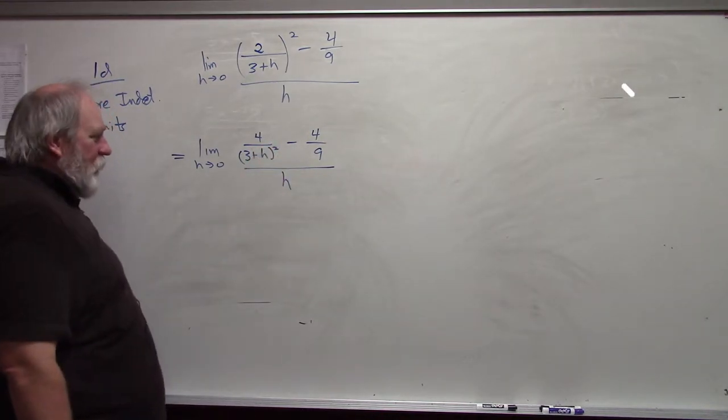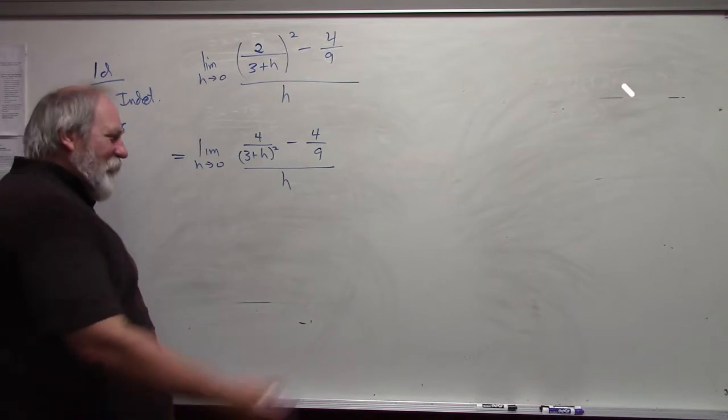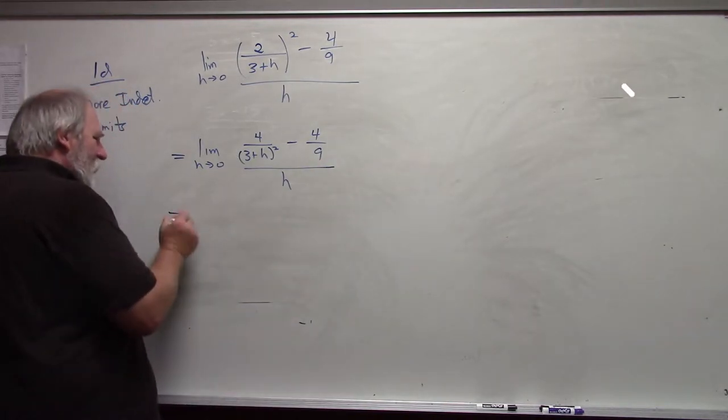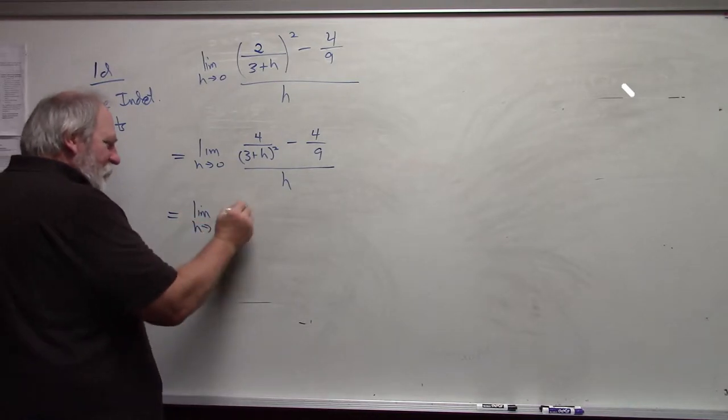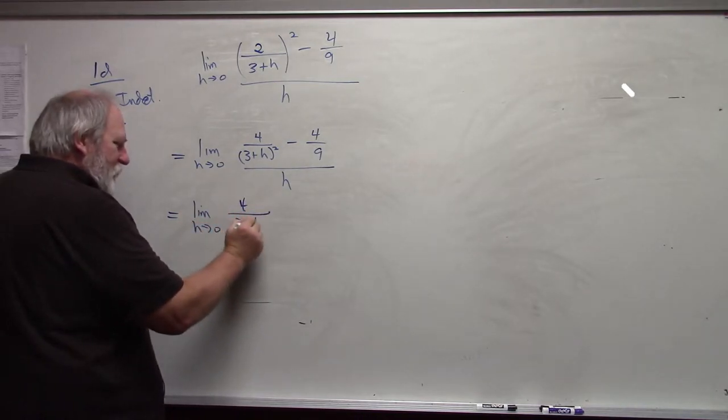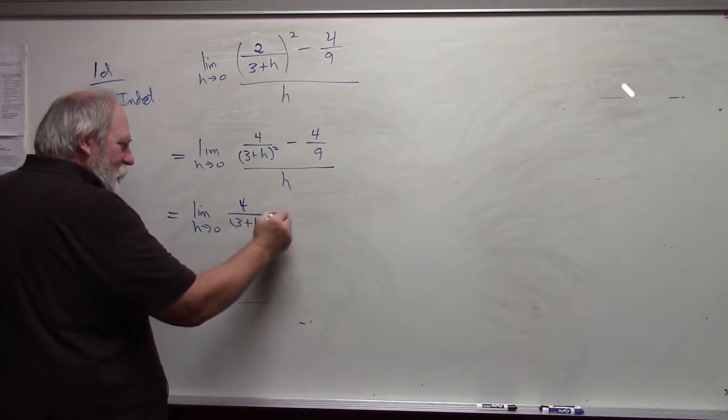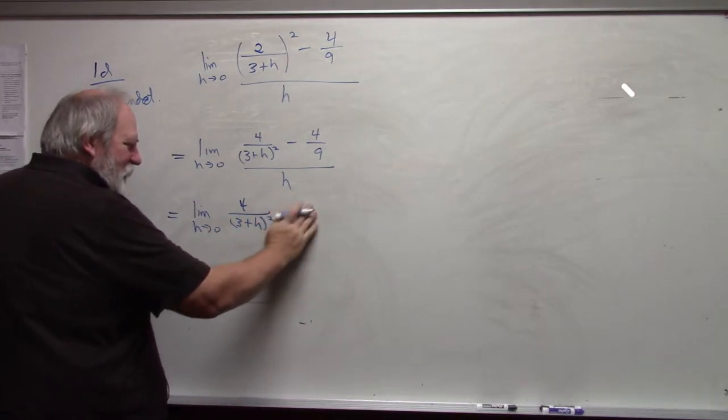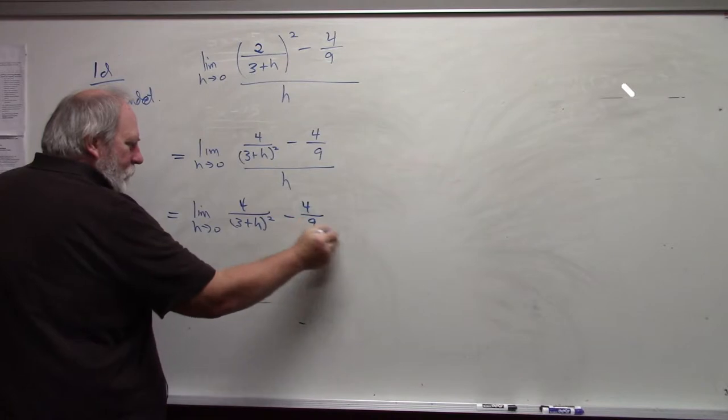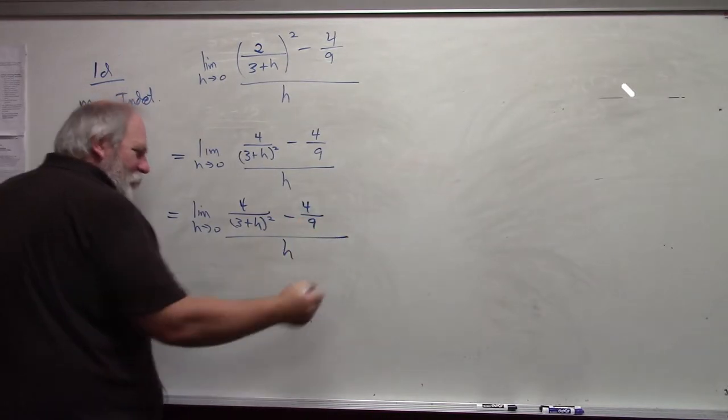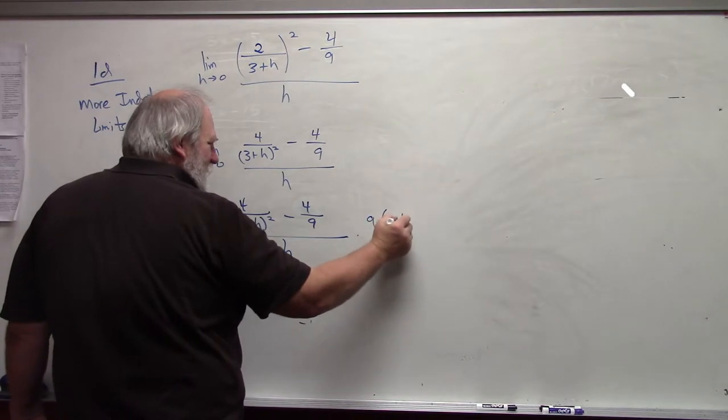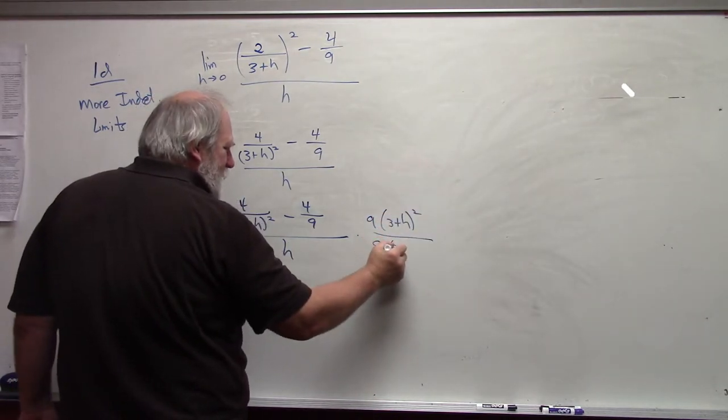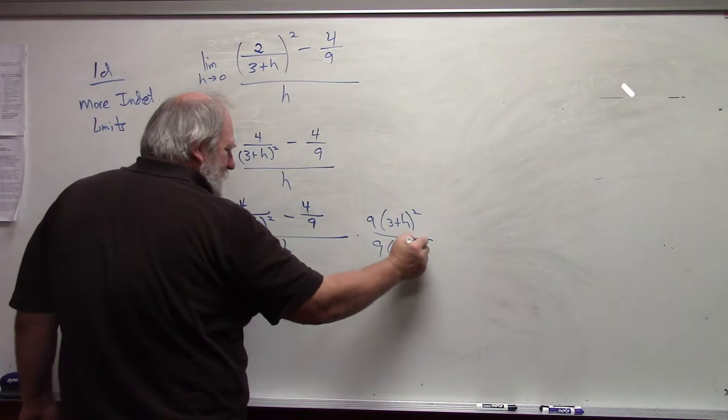I will multiply numerator and denominator by the common denominator of everything. So I get 4 over 3 plus h quantity squared minus 4 ninths all divided by h. And I'm going to multiply the big fraction by 9 times 3 plus h quantity squared over 9 times 3 plus h quantity squared.